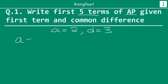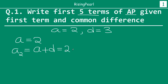So the first term is obviously A, which is given as 2. The second term is A₂ — we write it this way, A subscript 2. So we find this by taking the first term and adding the common difference to it. So the first term is 2 and common difference is 3, so we simply add: 2 plus 3 is 5.